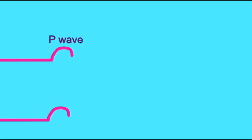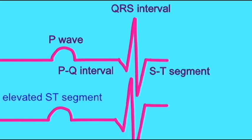The ST segment can be above its normal baseline during an acute heart attack. It can be depressed due to insufficient oxygen reaching the heart.